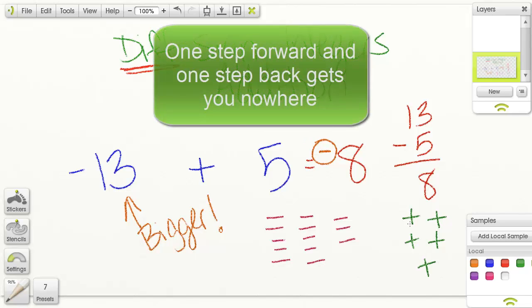Well, if you lose a dollar and you get a dollar, you have zero dollars. Plus 1, minus 1 is zero. So that's called a zero pair. These guys, right here, make a zero.